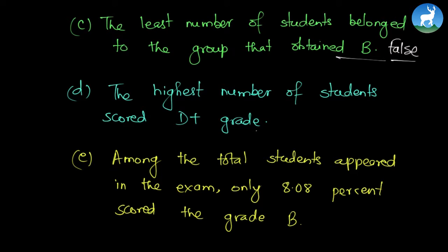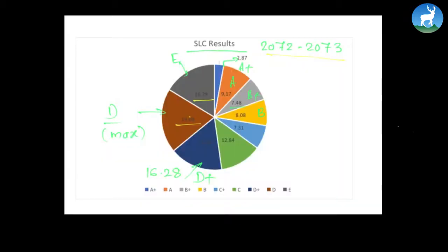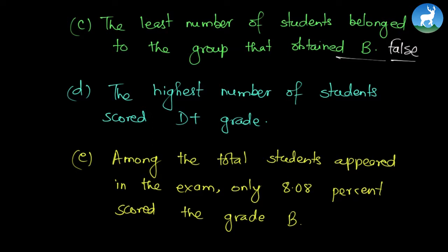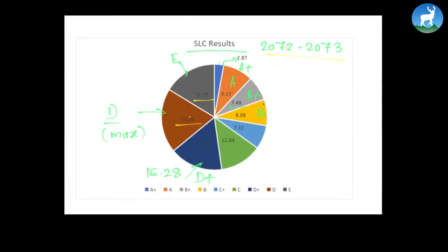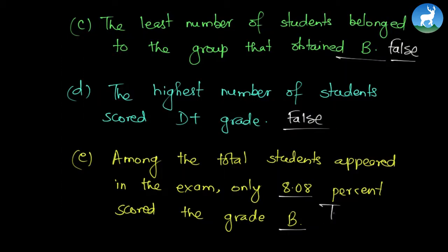The next statement is: 'The highest number of students scored D+ grade.' Going back to the pie chart, the maximum was D, not D+ — so this is also false. The final statement is: 'Among the total students, only 8.08 percent scored grade B.' Looking at the pie chart, yes — 8.08 percent did score B, which is a correct statement. So this one is true. Out of all the statements, we had four false and one true.